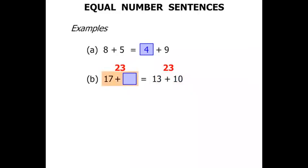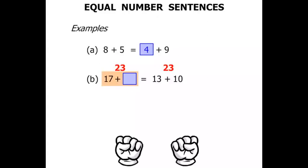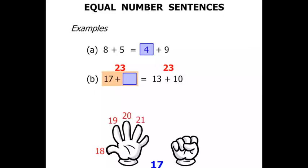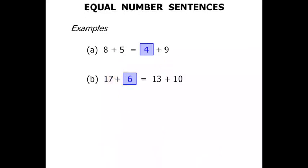So 17 plus something is 23. If you know the answer, great. If not, let's use our hands. We're thinking 17, we need to get to 23. So let's think: 17, 18, 19, 20, 21, 22, 23. We needed to add 6 to get that answer. Terrific!